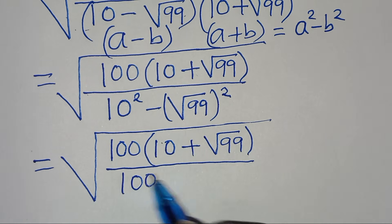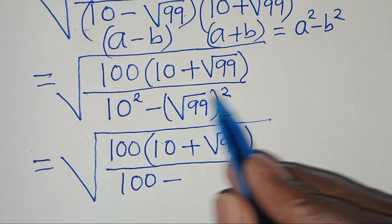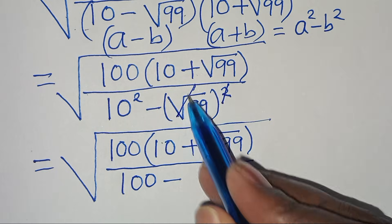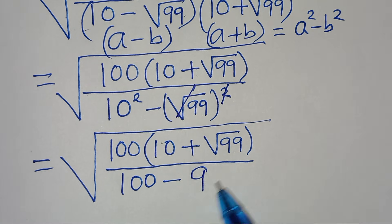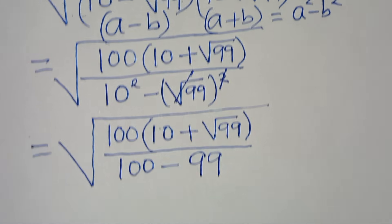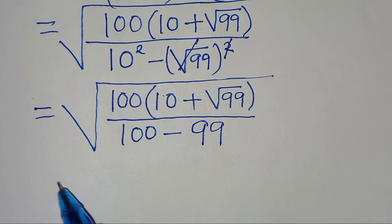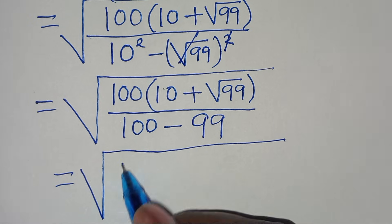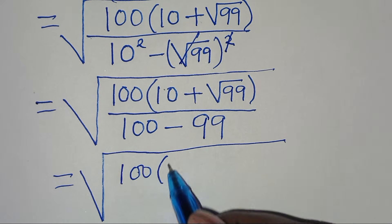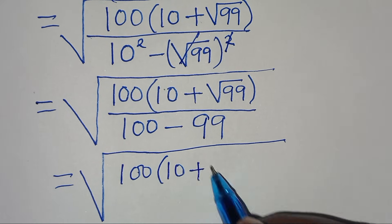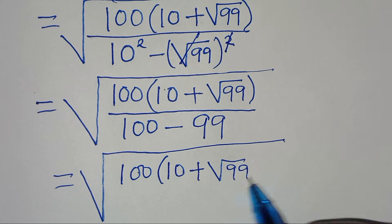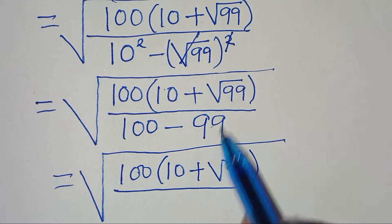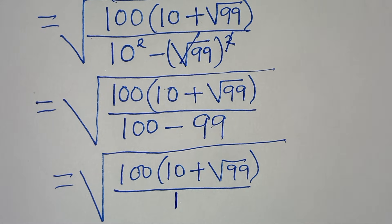The denominator is 10 squared, which is 100, subtract square root of 99 raised to the power of 2. We can eliminate the square root, giving us 100 minus 99. So we have square root of 100 multiplied by 10 plus square root of 99, divided by 100 minus 99, which equals 1.